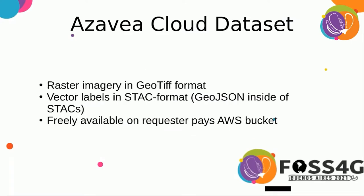The dataset is composed of rasters in GeoTIFF format, and the labels are vector labels — specifically GeoJSON stored in the STAC format, the spatiotemporal asset catalog format. This is a format that Azavia is excited about and a number of our products use it. It's meant to facilitate easy interchange of geospatial data of all kinds. All of these data are available in a freely available requester-pays AWS bucket.